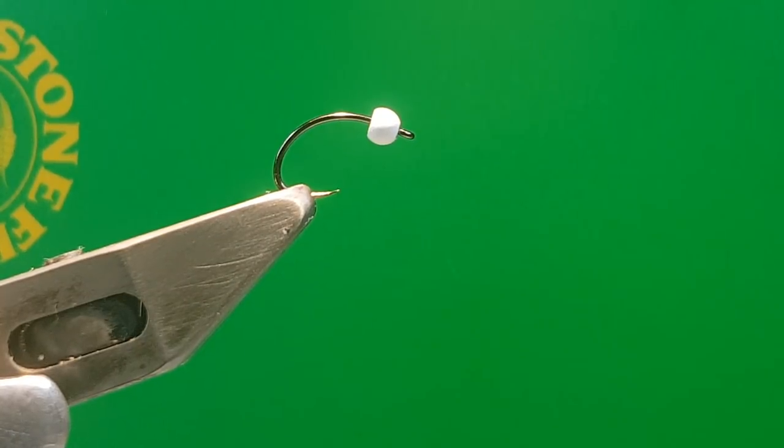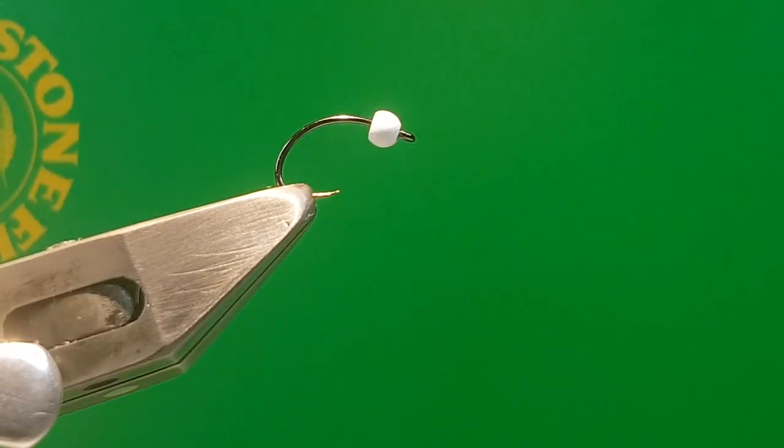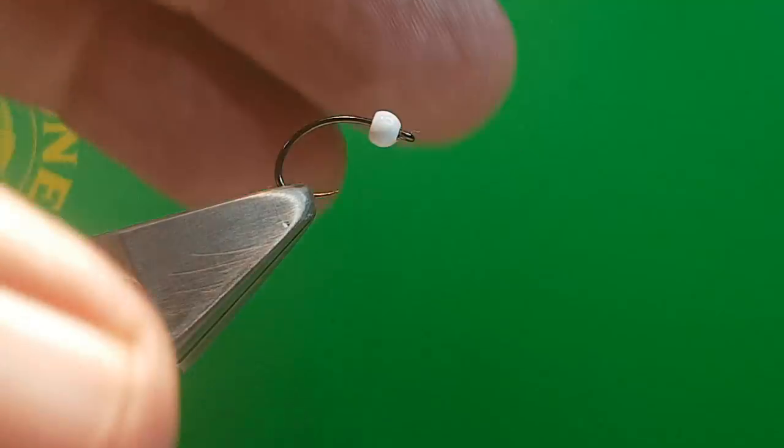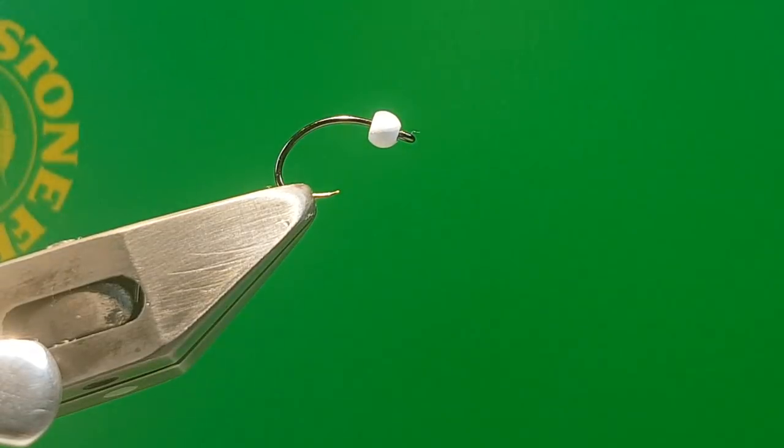The hook in the vise is a Fasna. It's actually a clink hook, number 120. This is a size 14 with a 3mm counter sunk slotted white bead.